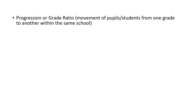We look at the progression or grade ratio. When we are talking about progression or grade ratio, we are talking about the movement of students from one grade to another. In our country, we usually use class — from one class to another. For example, moving from JSS 1 to JSS 2, or from JSS 2 to JSS 3. You are moving within the same school. That is the progression rate within the same level.